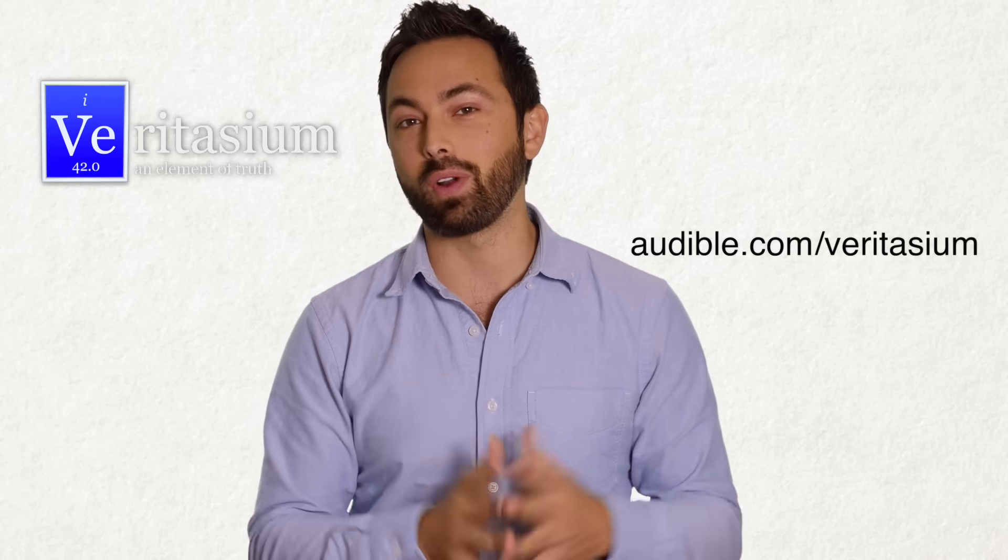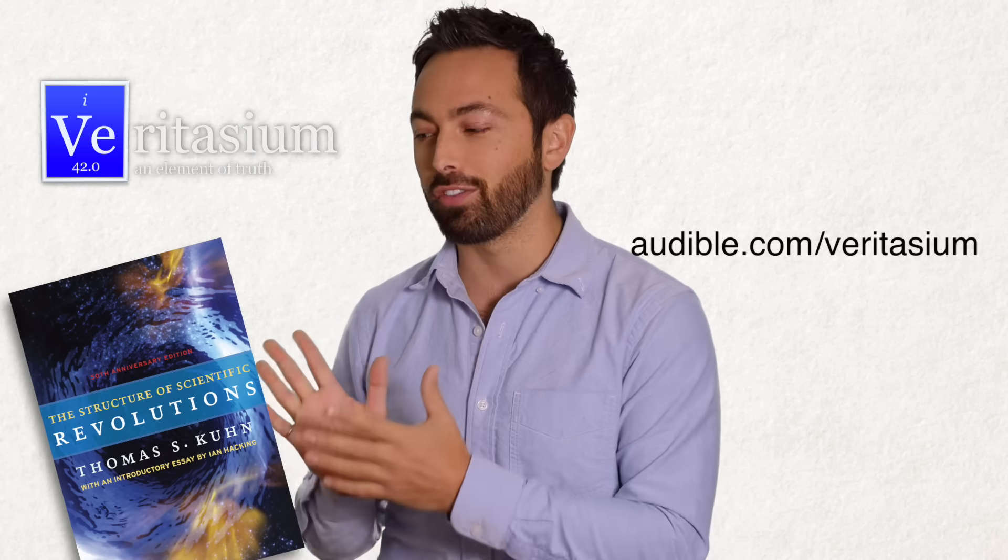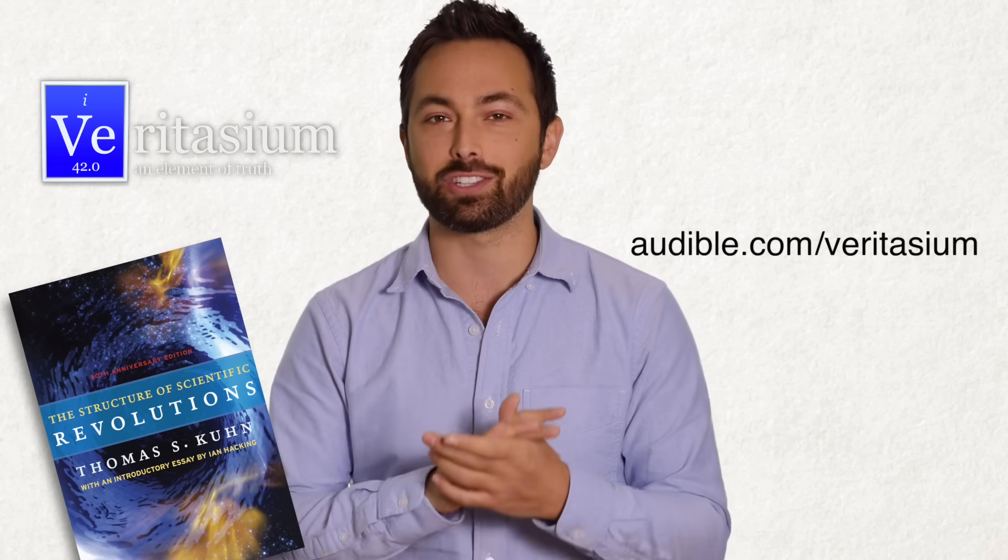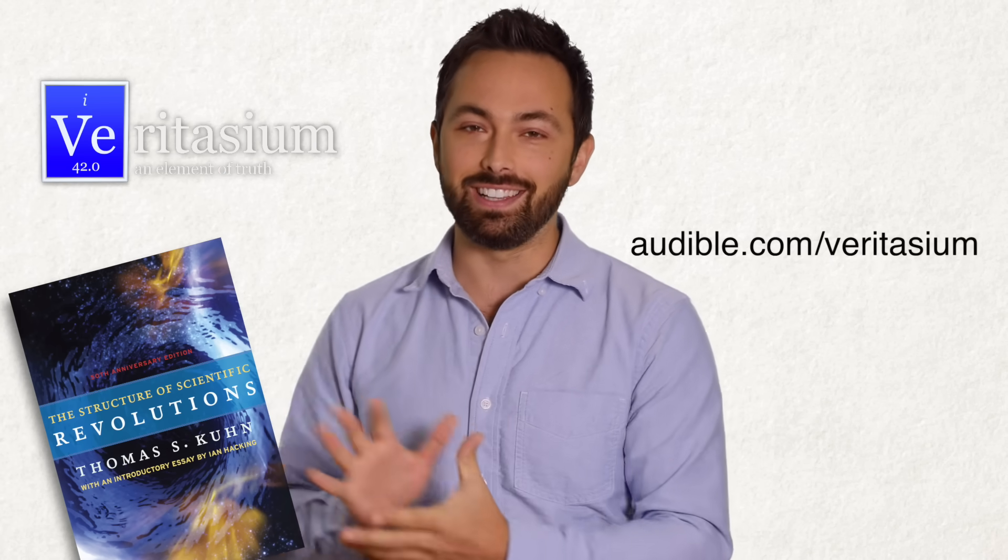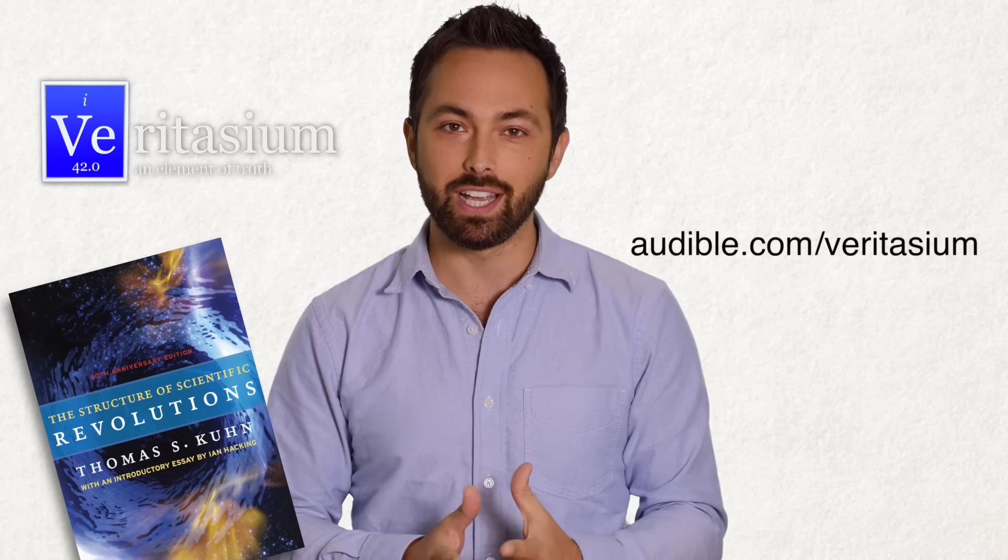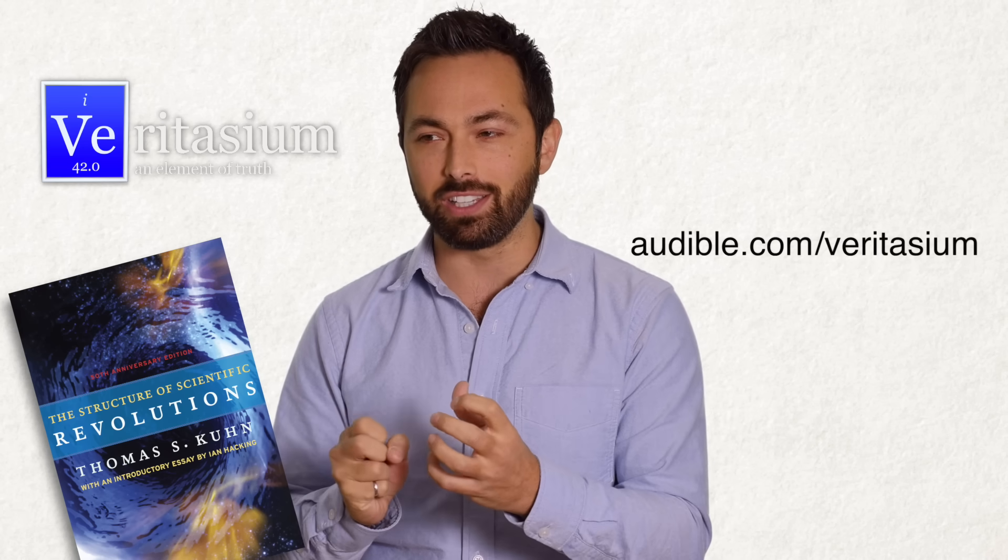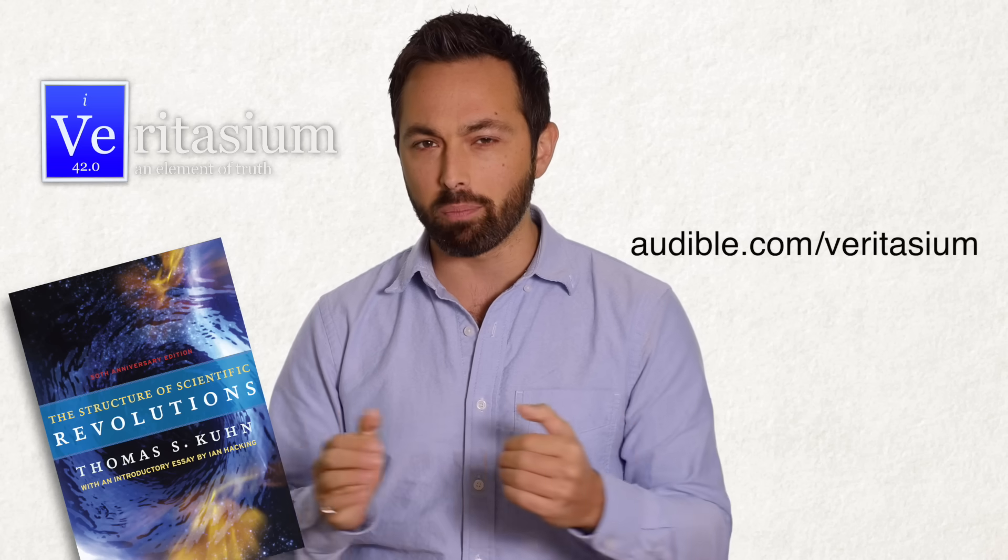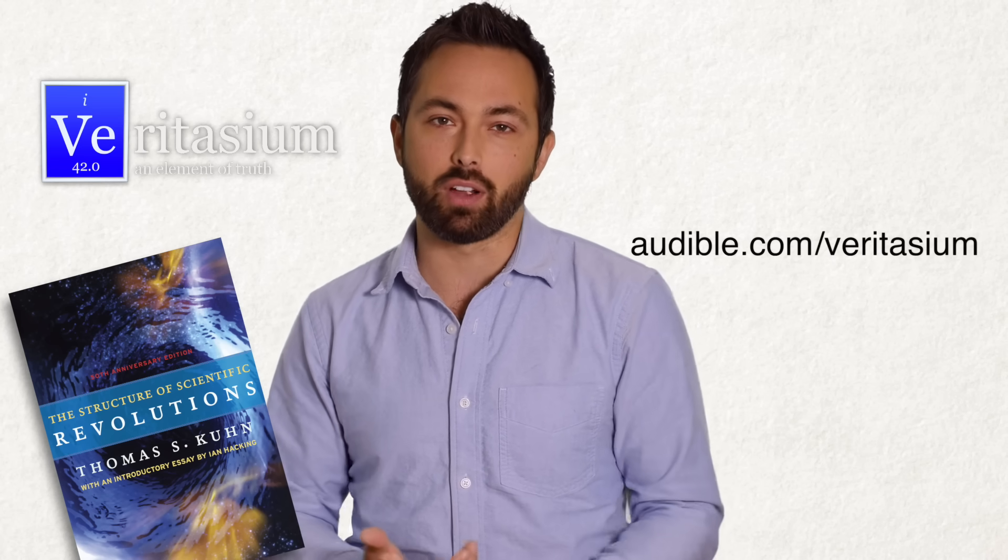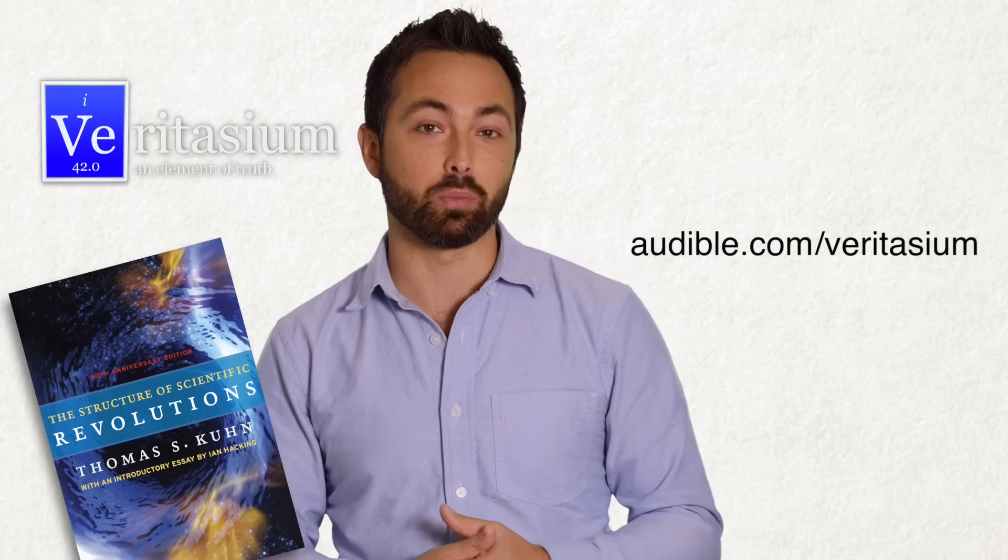And I have a book that I would recommend to you. It is called The Structure of Scientific Revolutions by Thomas S. Kuhn. This is a classic in the history and philosophy of science, and it'll make you see science in a different way because it shows us that science is not just one process, but there are actually revolutions that take place when big discoveries are made. And that really changed my thinking about science when I first read this book 10 years ago.